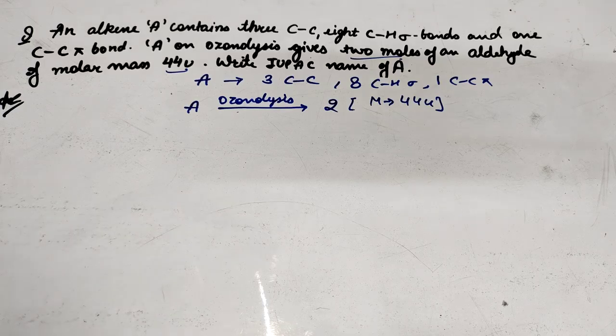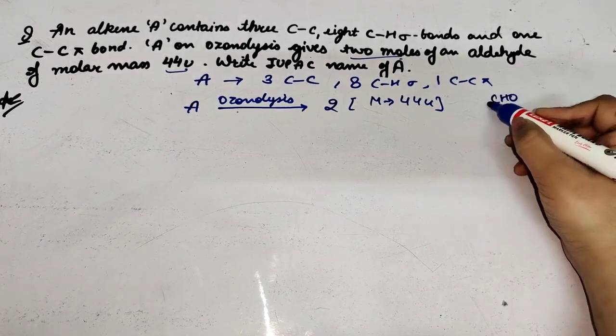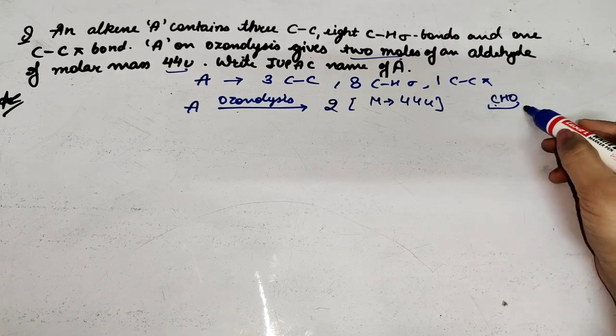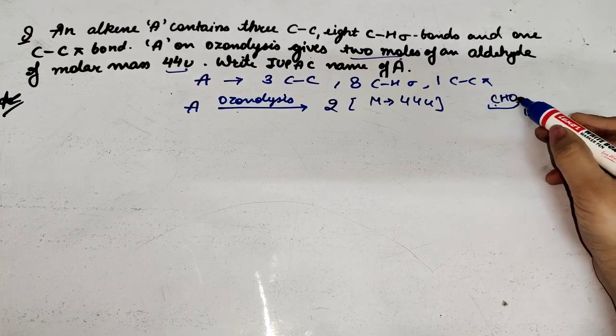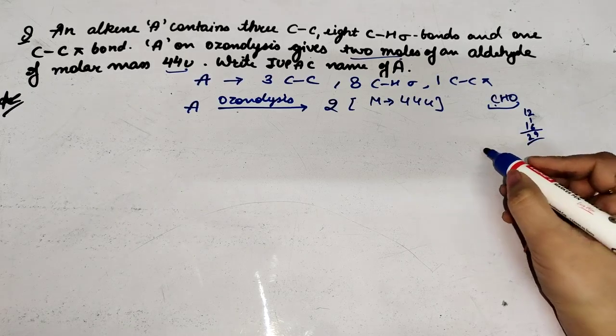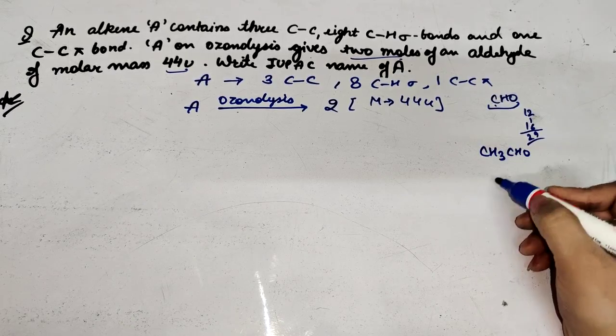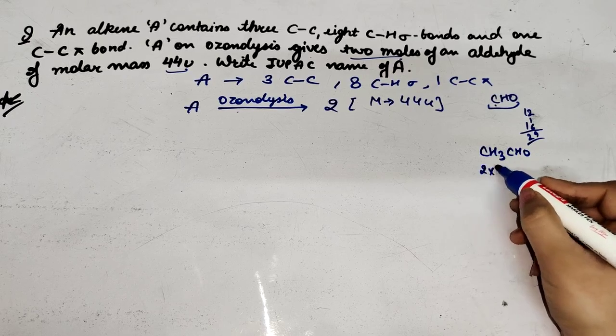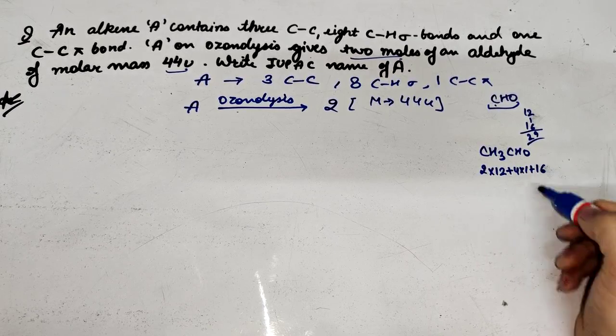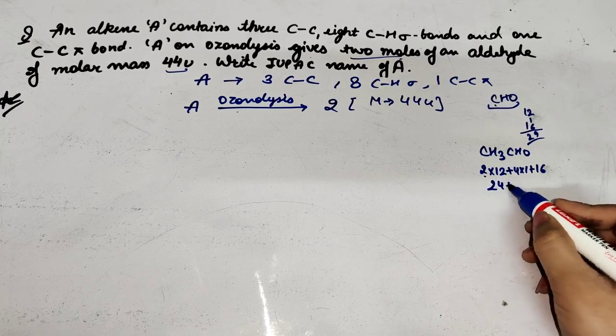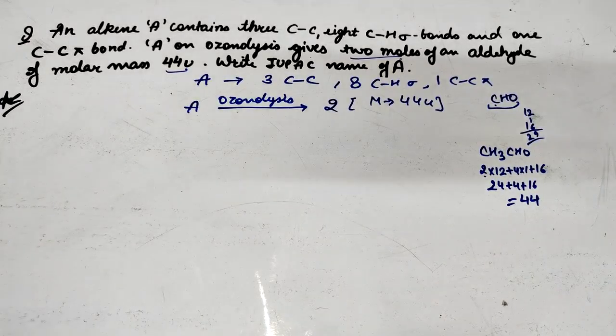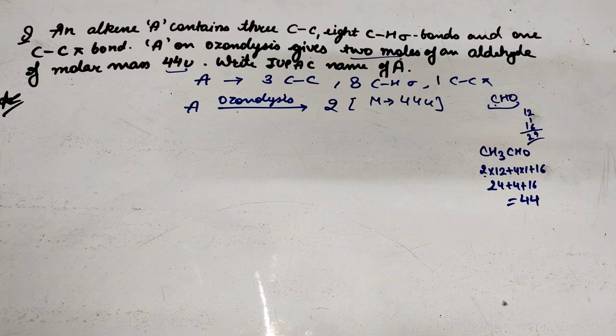First, our task is to find out which compound has molar mass 44u. For aldehyde group, let's check: CHO - count it, C is 12, hydrogen is 1, and oxygen is 16. This equals 29. Next is ethanal CH3CHO - 2 carbons is 2 into 12 equals 24, total 4 hydrogens is 4 into 1 equals 4, oxygen is 16. So 24 plus 4 plus 16 equals 44.